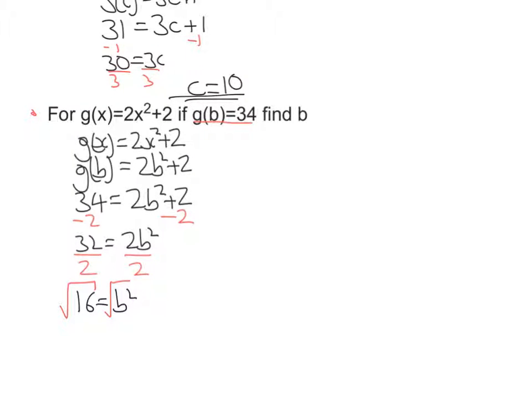So what I'm going to be left with here is b = the square root of 16, which is 4. But remember, if you square root something, you get a plus or minus, so it's plus or minus 4. The answer is b = ±4.